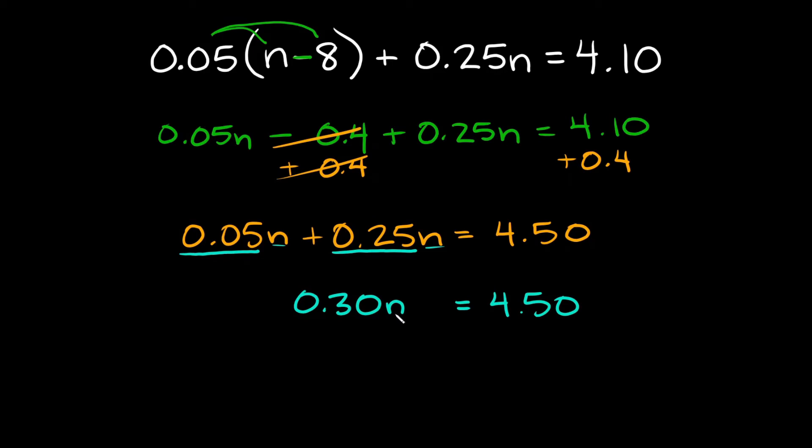Now we're just trying to isolate n by itself right? So we need to get rid of this 0.30. Since we're multiplying here in order to undo the multiplication we're going to divide by 0.30. Because this is what we're trying to get rid of and you do that to both sides of the equation.